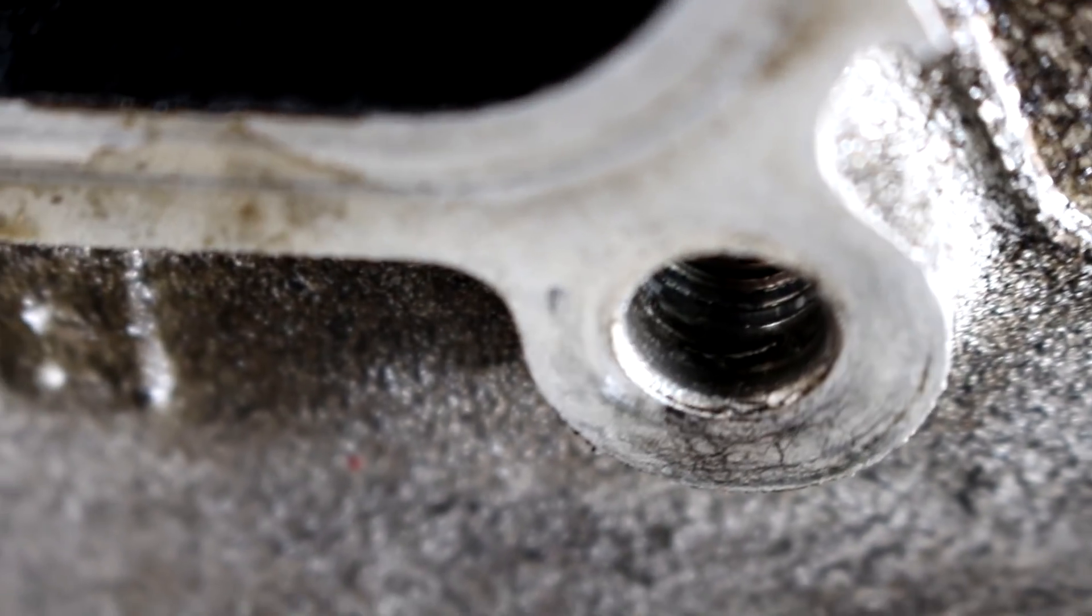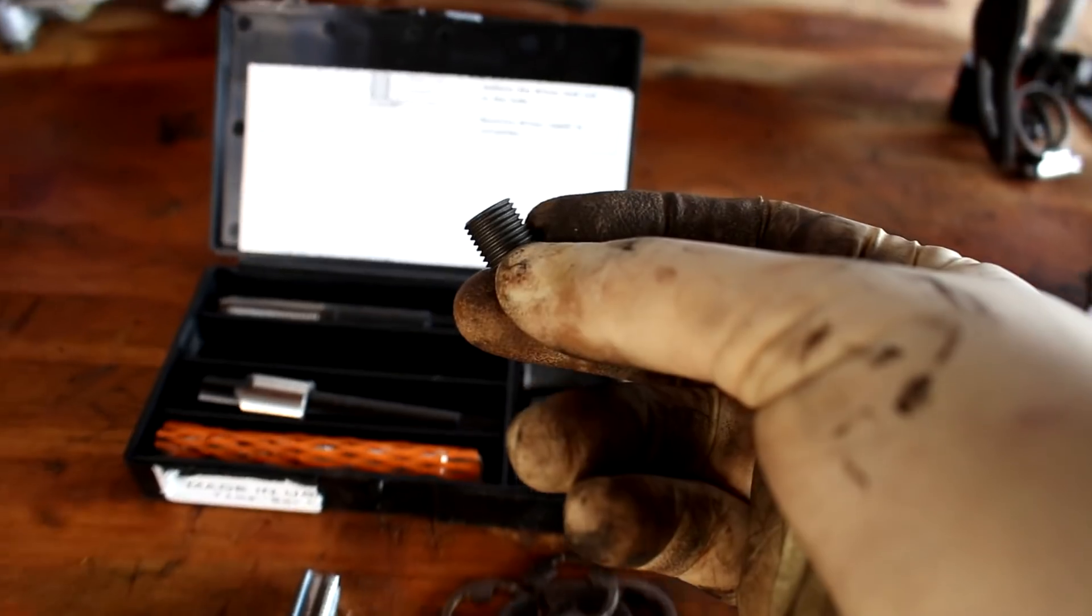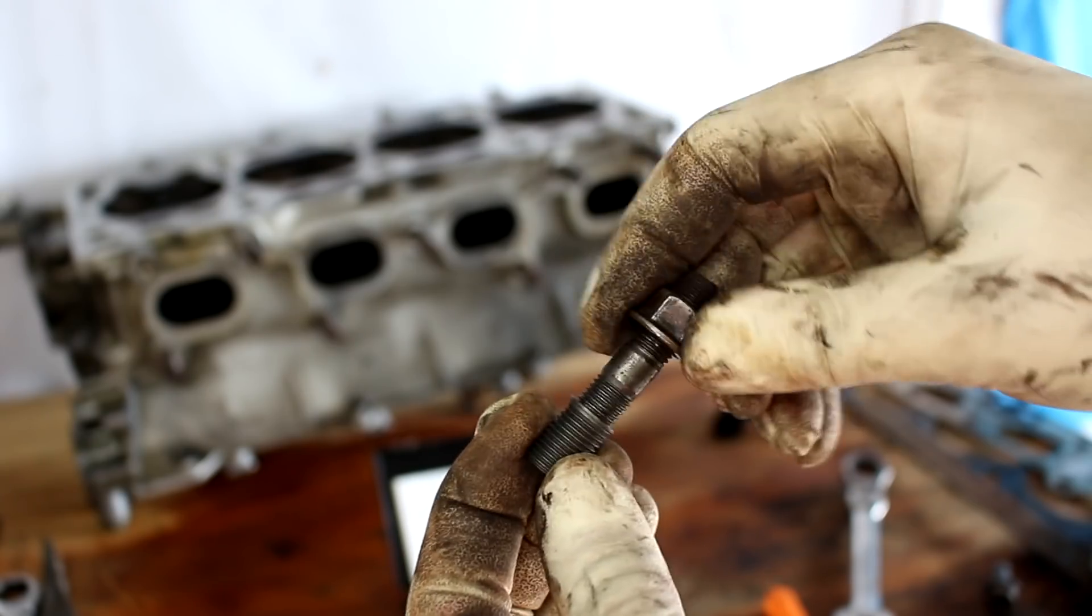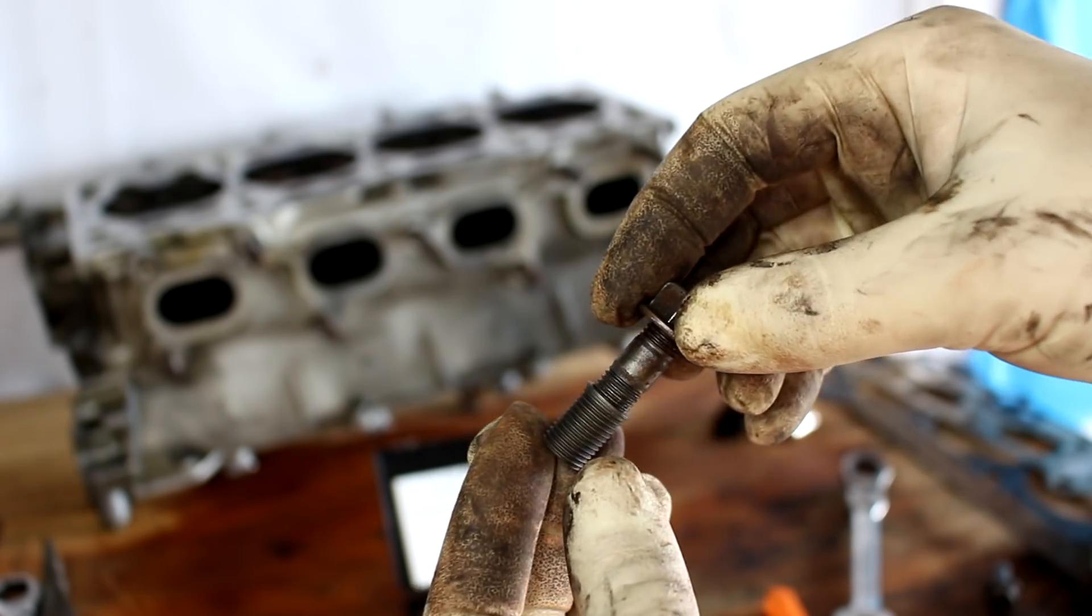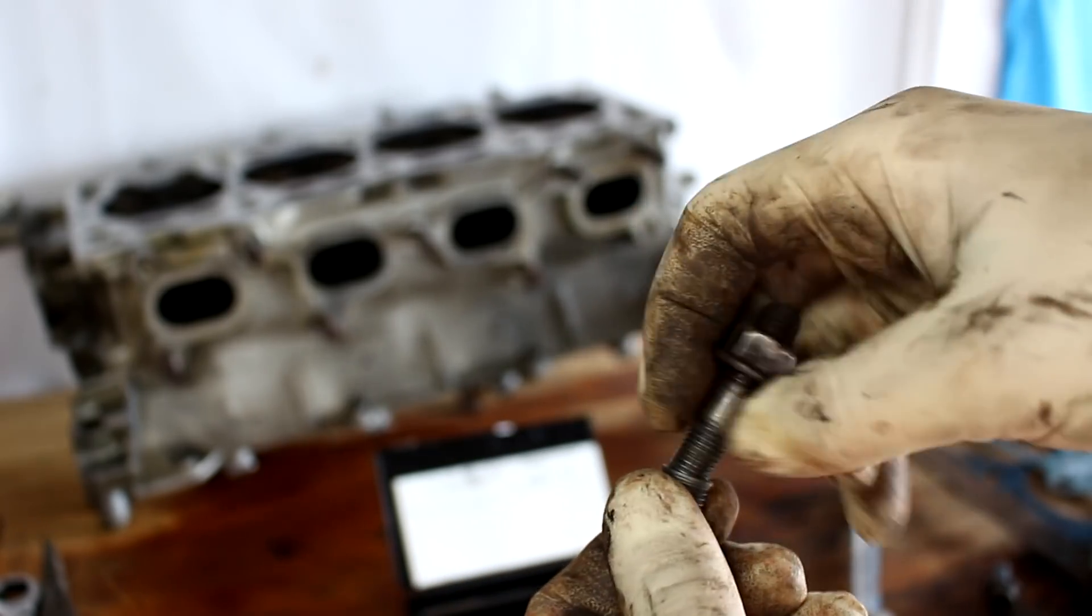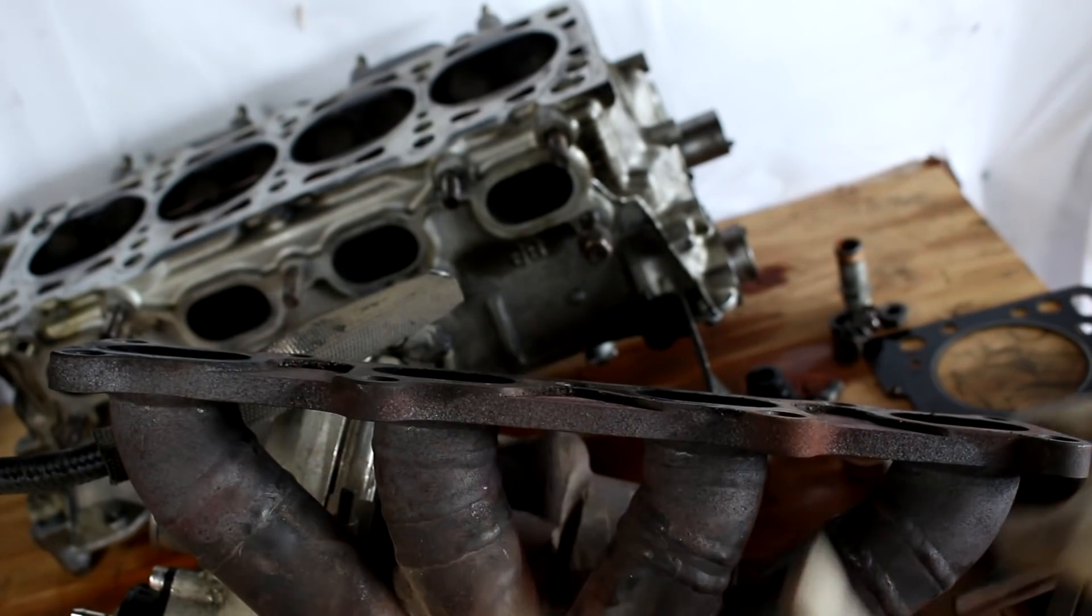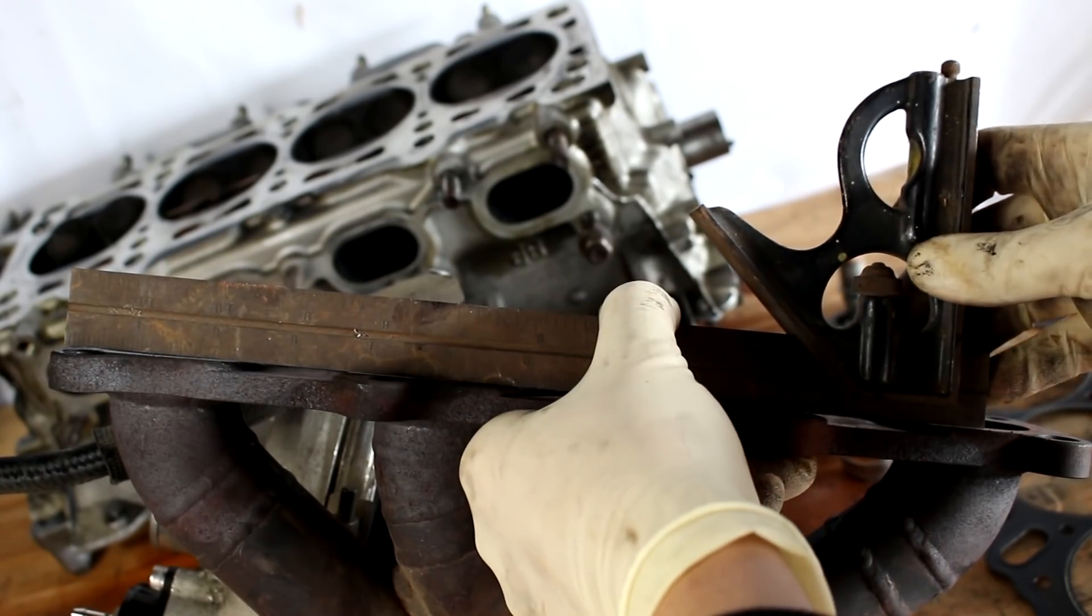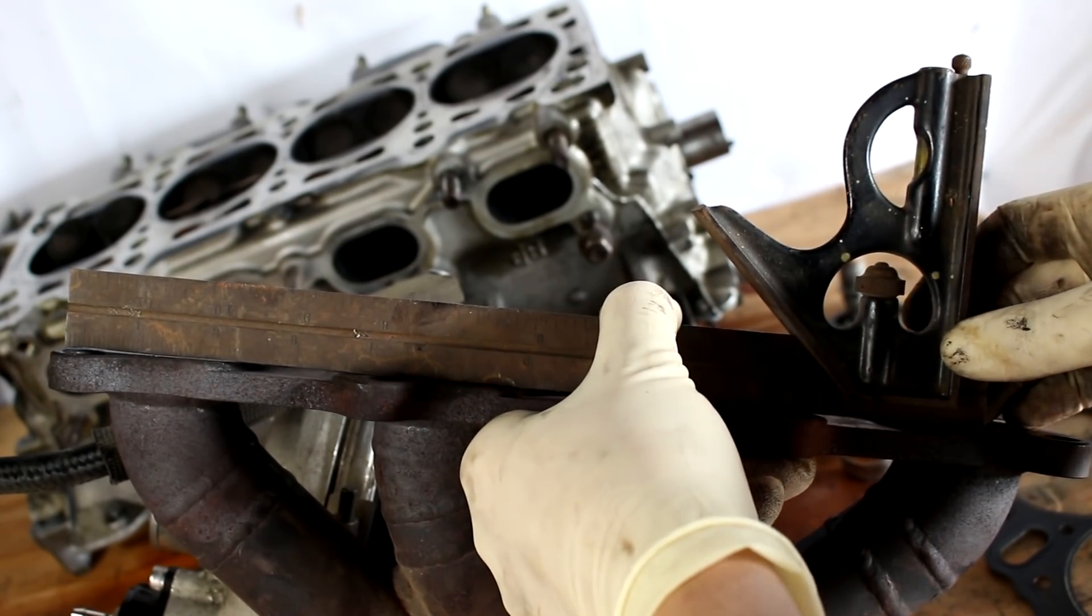And the way you can do that is with what's called a time cert kit. And that is this kit right here that comes with threaded sleeves and you basically drill out the hole that the stud came from to a slightly larger size. And then you cut new threads into it. You screw in this sleeve and then voila, you have a new threaded hole that you can put a factory size stud back into. I was actually planning on doing it with the head still in the car, but now it's going to be even easier. I might even have the machine shop do it for me.